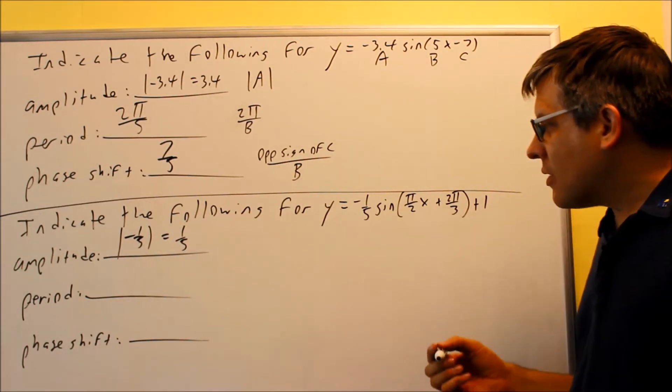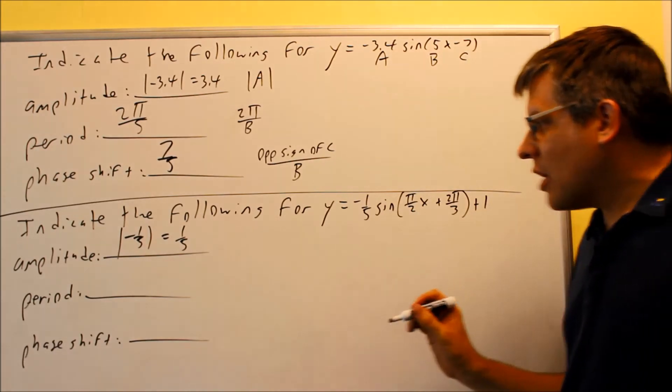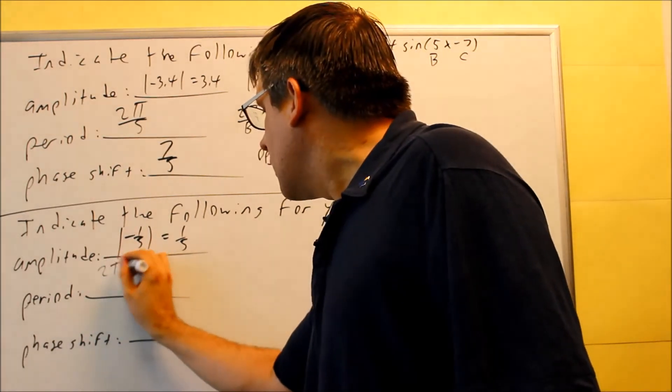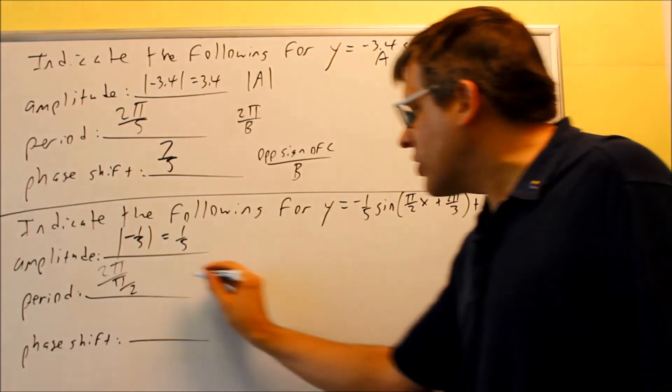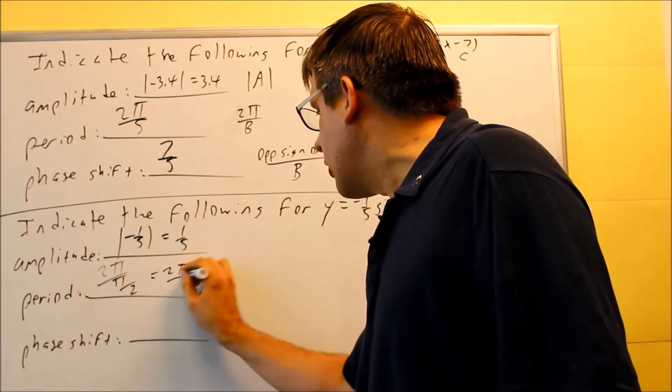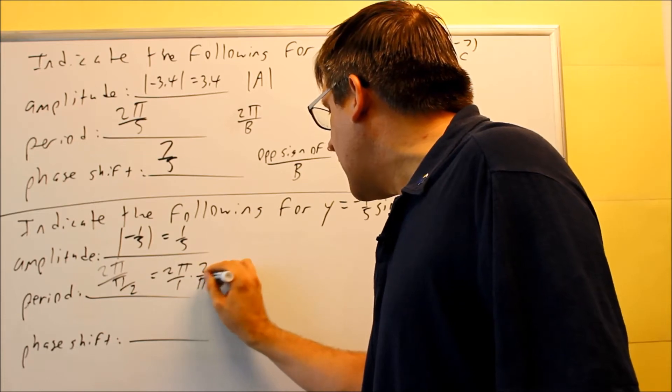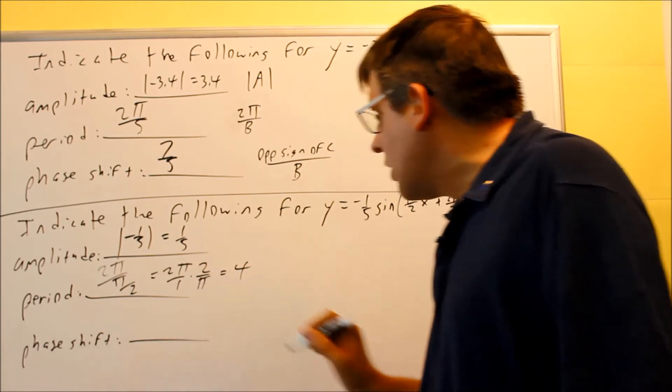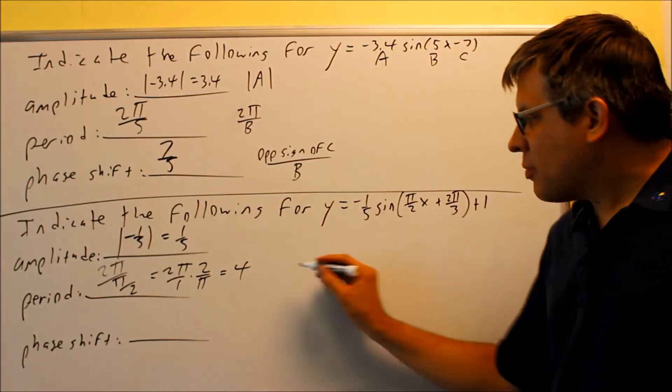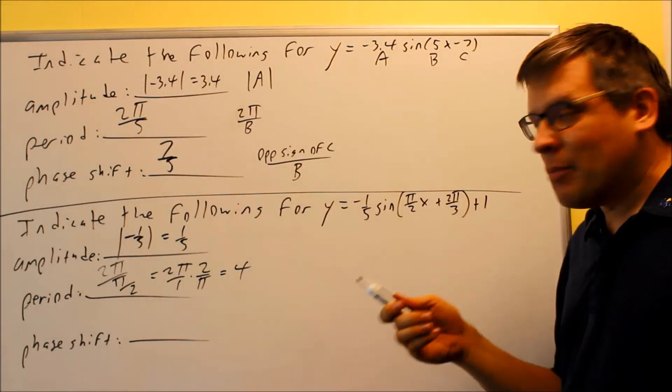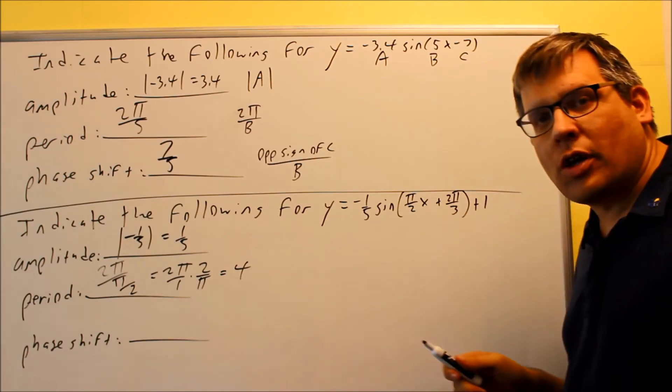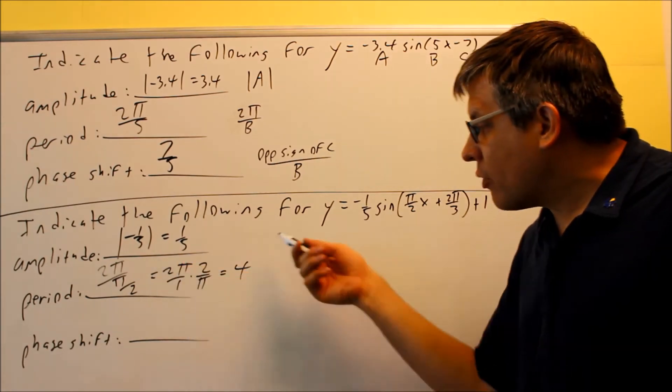Period, it's 2π divided by B. Now in this case we have 2π divided by π over 2. If we take that and we flip it, that's 2π over 1 times 2 over π. The π's cancel and you get 4. So in this case my period ends up being a whole number. So again, your period doesn't have to always have a π in it. It might actually cancel and you might get a whole number for your period like we do here.